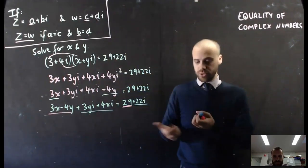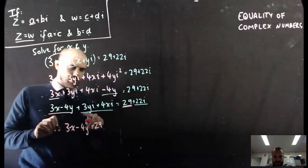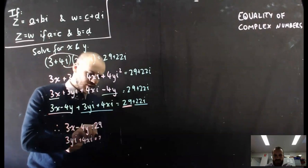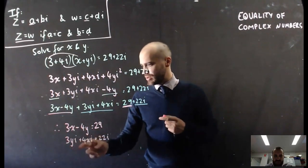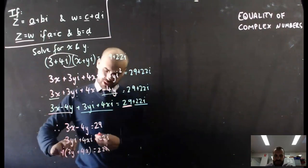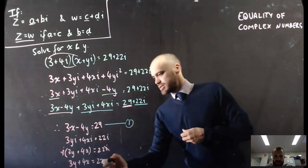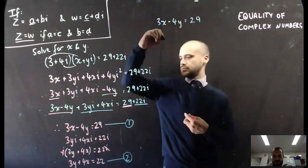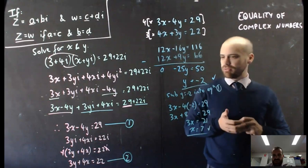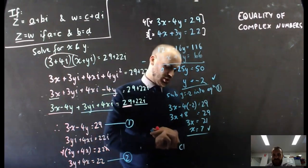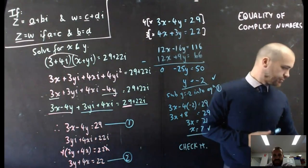Using the FOIL method on (3 plus 4i)(x plus yi), I need to identify my real and imaginary components. 3x minus 4y is the real component (no i's), and 3yi plus 4xi is the imaginary component. So we set 3x minus 4y equals 29, and 3y plus 4x equals 22. Those are our two simultaneous equations with x and y — one from the real part, one from the imaginary part. Solving them using elimination gives us the solution.